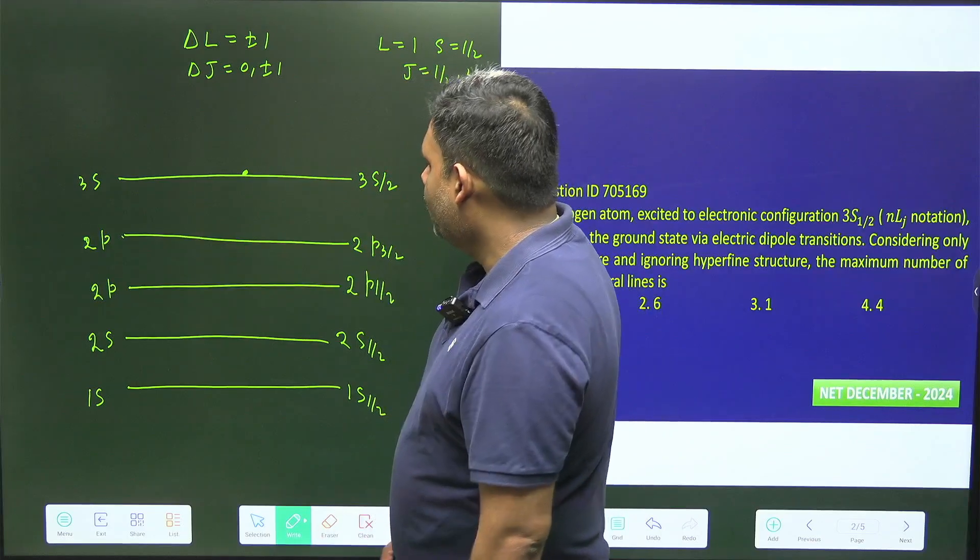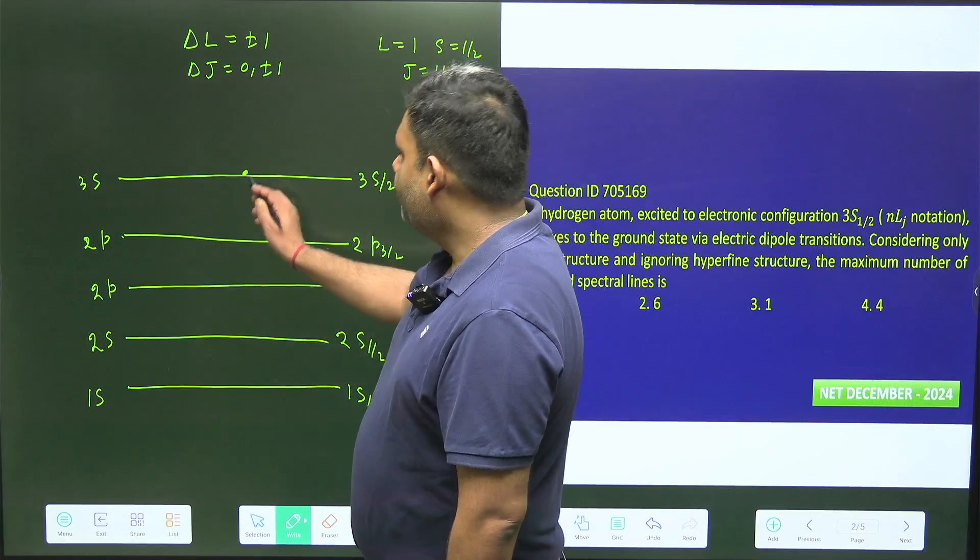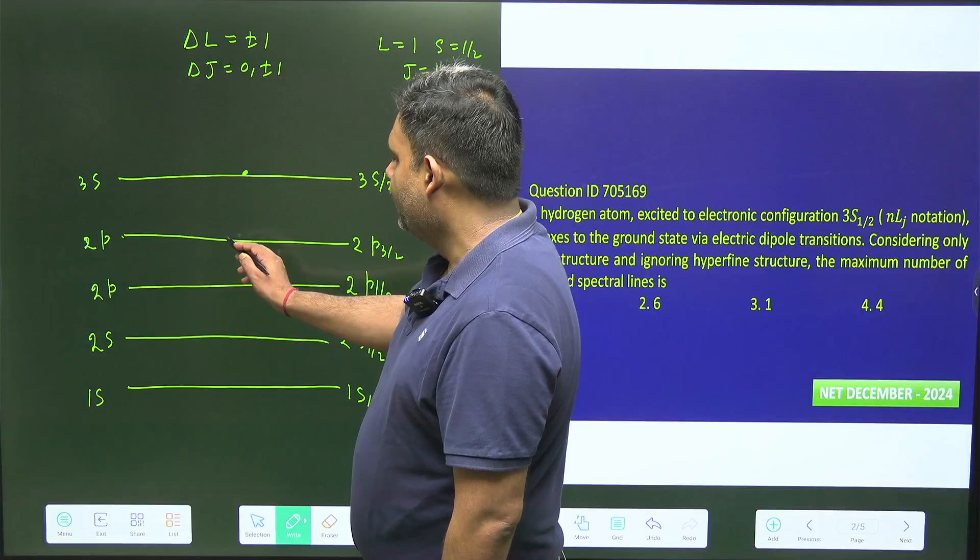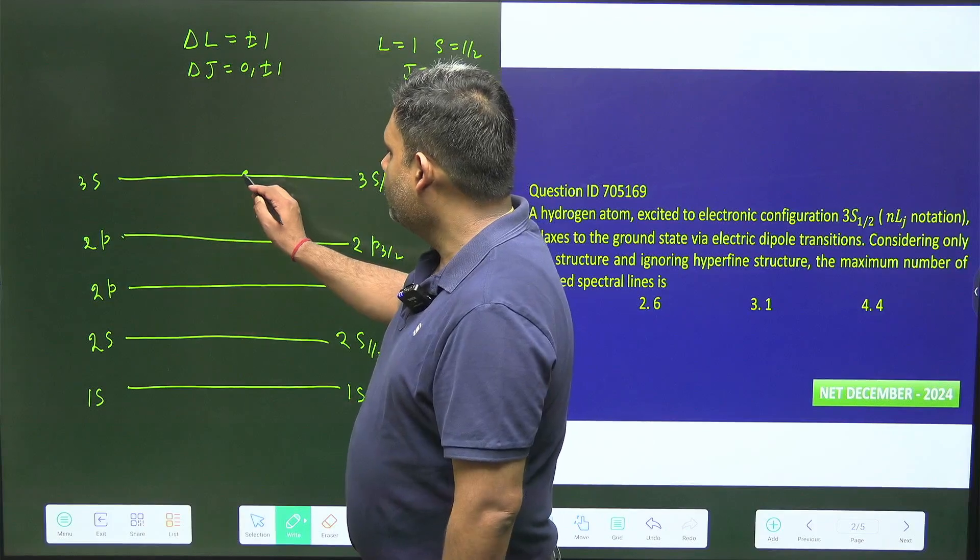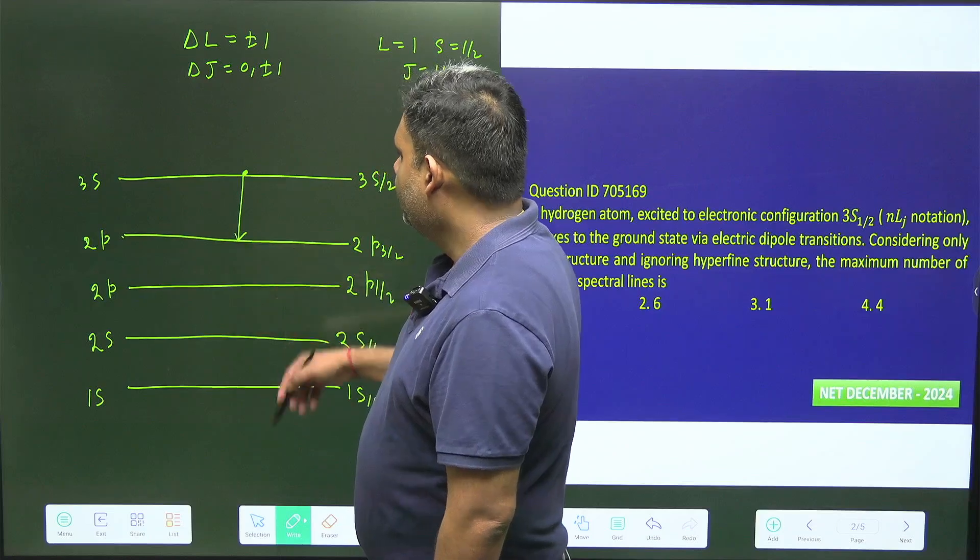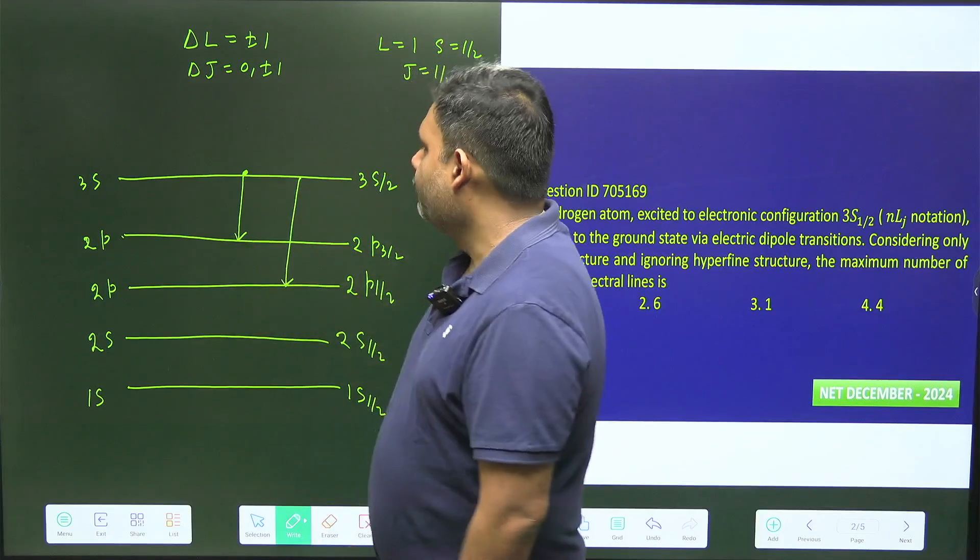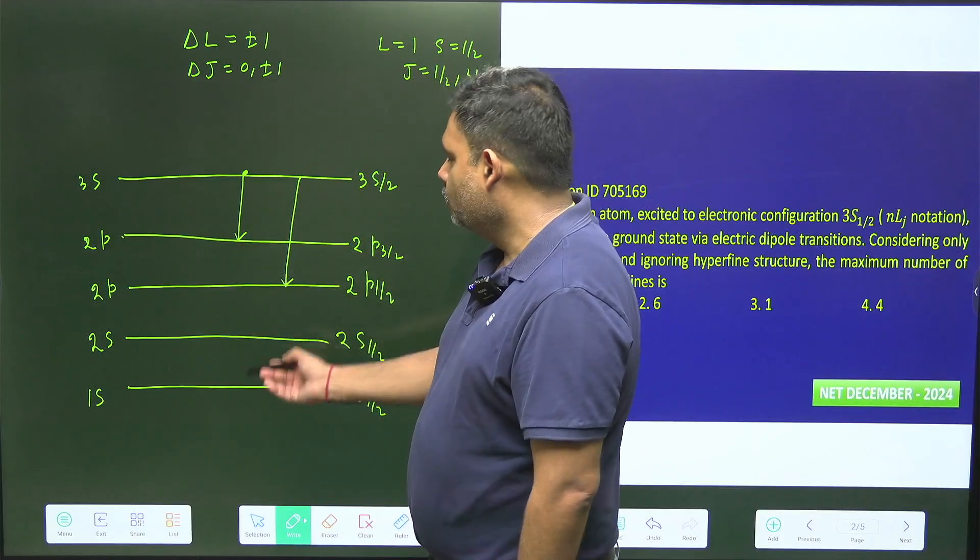So what will happen? There is one possible transition. The transition is it will first go from 3s to the p level, and after then it will go to the ground state. This is very beautiful. So there is one possible transition and there is another possible transition. This is the first level transition and after then the electron has to go to this level.